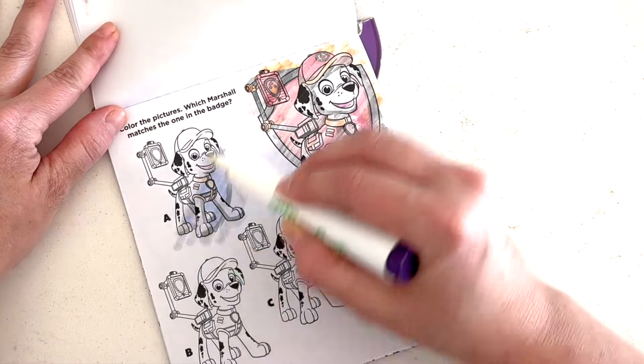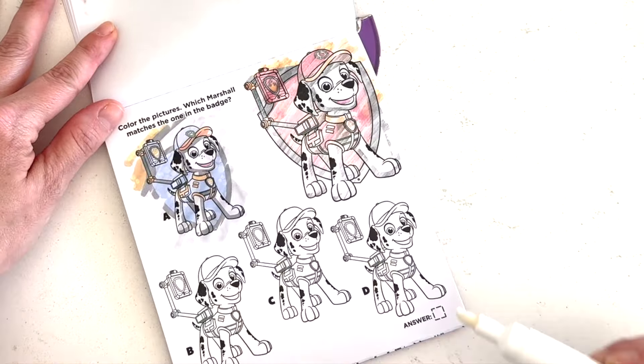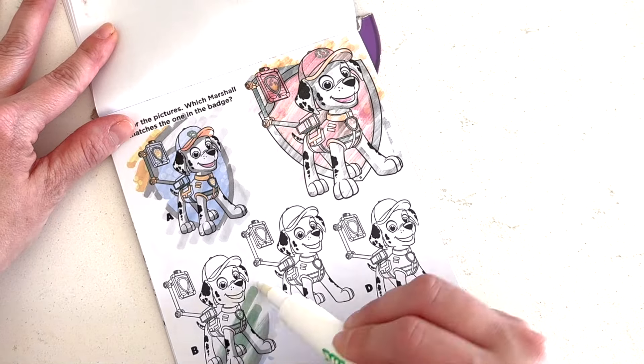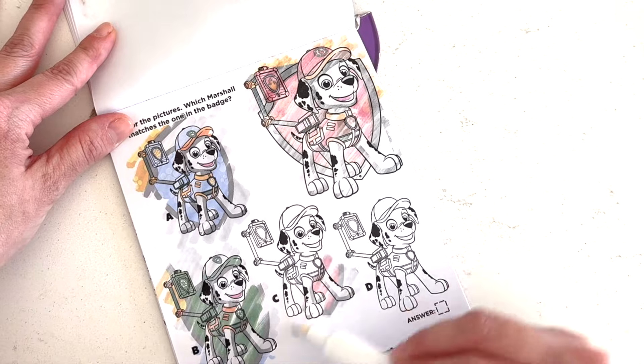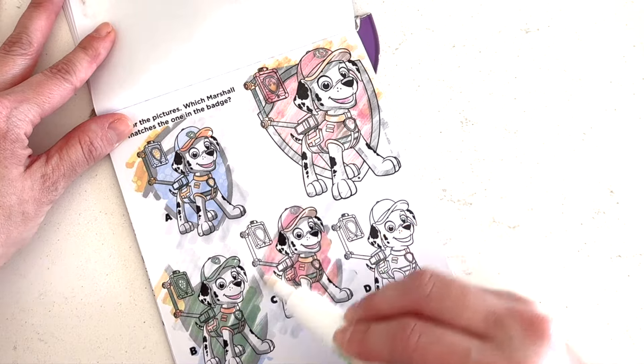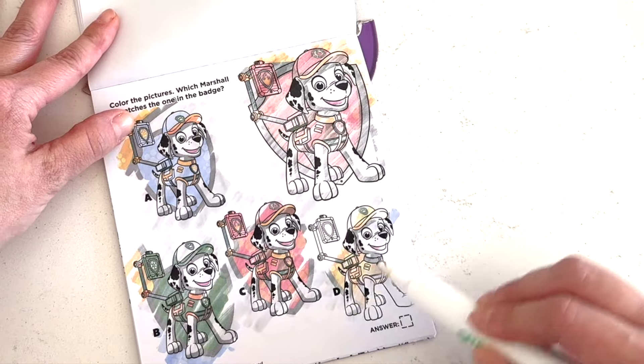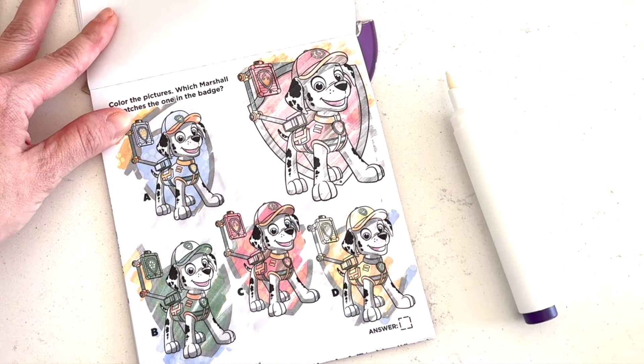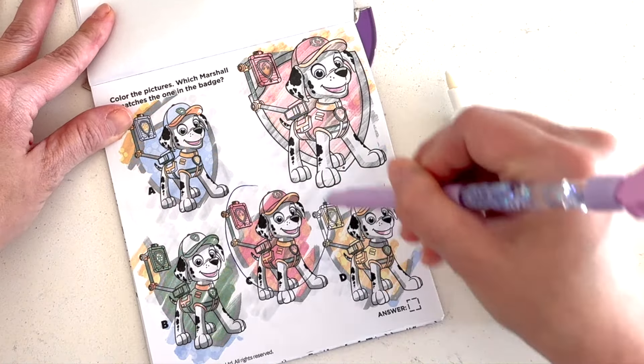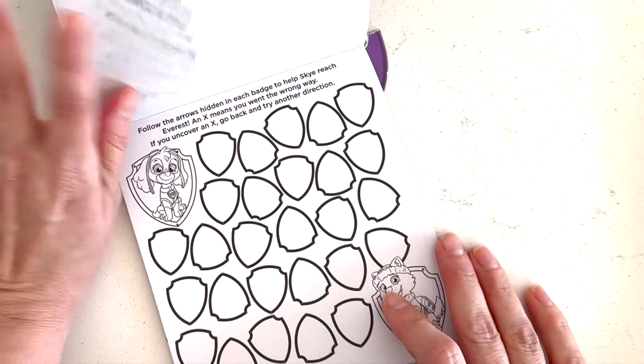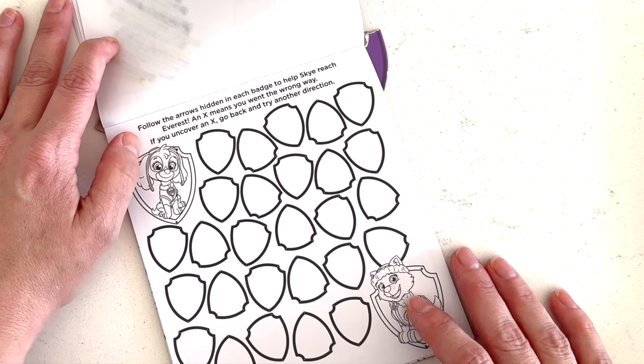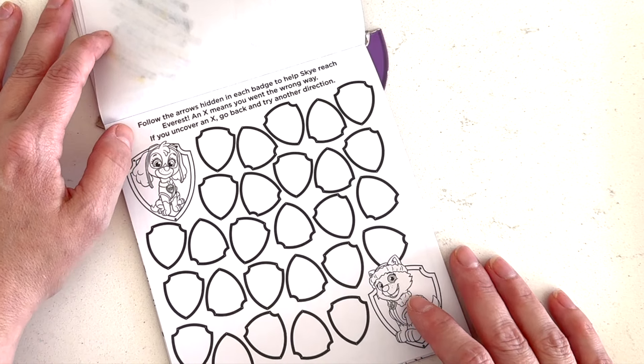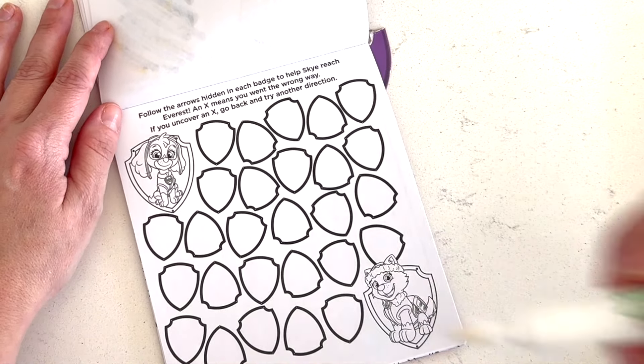Color the pictures. Which Marshall matches the one in the badge? Hmm. Let's see. Color him in first. Let's color in A. Oh, that doesn't match. Does B match? No! He's wearing Rocky's colors. What about C? Ooh. I think that's a match, guys. Yeah. That's Rubble's colors. All right. It's definitely letter C.